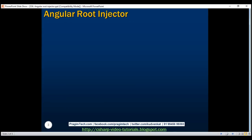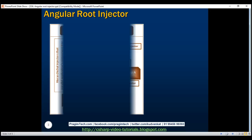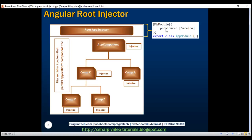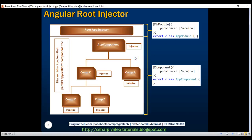In our previous video, we discussed that in Angular 2 we have one root injector at the application level plus an injector at every component level. To register our service with the root injector, we use the providers property of the NgModule decorator, and to register our service with an injector at a specific component level, we use the providers property of the Component decorator of that specific component class.